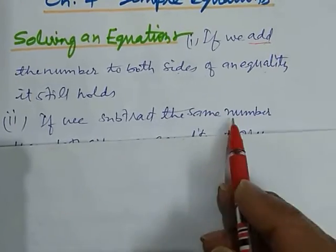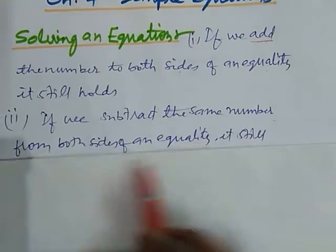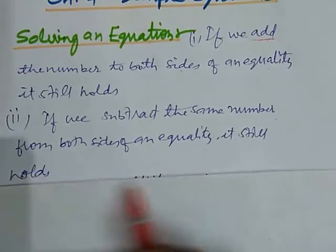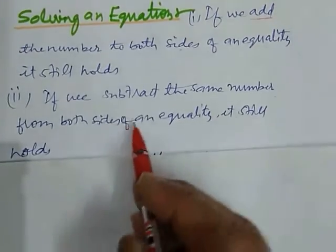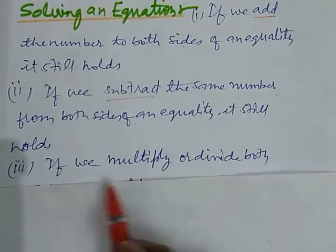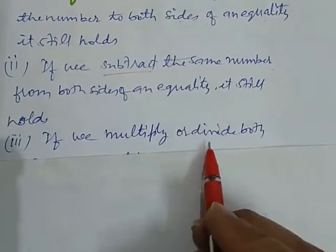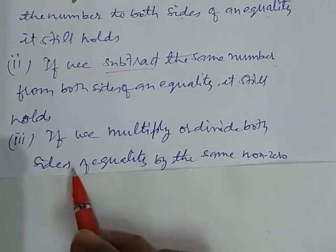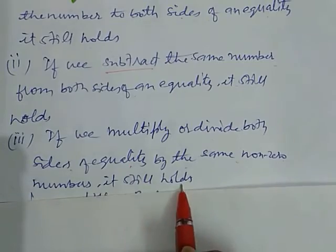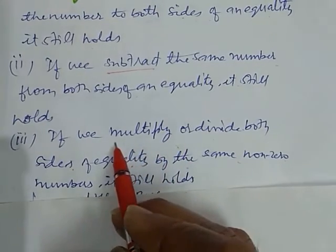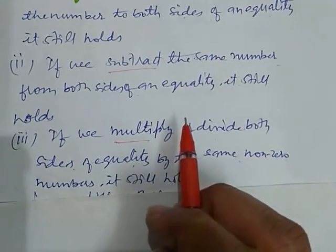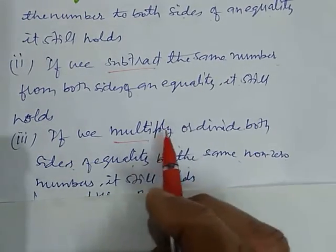If we subtract the same number from both sides of an equality, it still holds. So by subtracting, we can also try to solve an equation. Also, if we multiply or divide both sides of an equality by the same non-zero number, it still holds. We take these steps because we want to separate the variables.